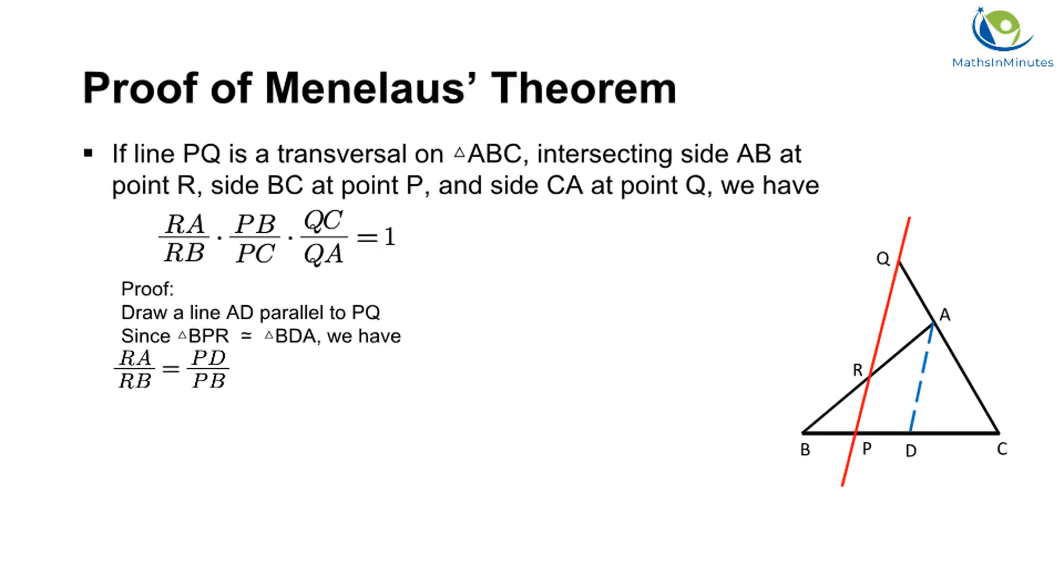We can prove Menelaus Theorem using similar triangles. To create similar triangles, we first draw a line from A to reach BC at point D, such that line AD is parallel to line PQ. Based on angle-angle similarity rule, triangle BPR is similar to triangle BDA, therefore we have RA over RB is equal to PD over PB.